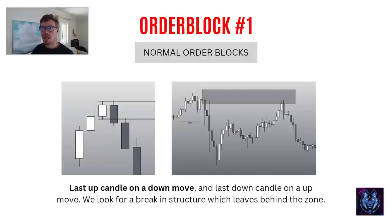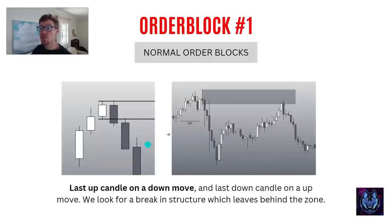Order block type one: normal order blocks. These are just the basic order blocks everyone gets taught — it's the last up candle before a down move and the last down candle before an up move. We look for break-in structures which leave behind these zones. These are lovely indecision candles — big wicks and little bodies — accompanied by break-in structures and displacement of price.